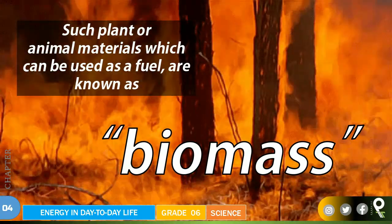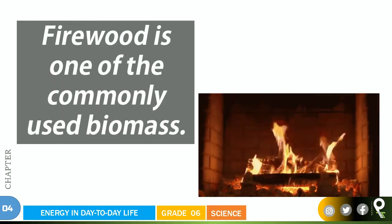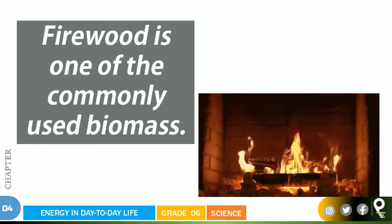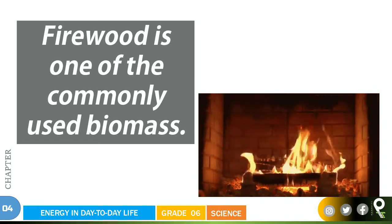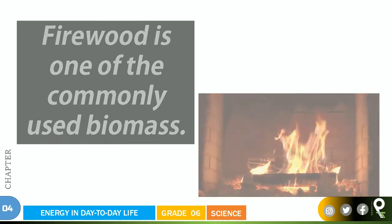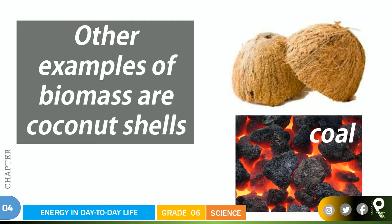Biomass refers to plants and animal materials that we use as fuel. Firewood is one of the most commonly used types of biomass. Almost all houses in Sri Lanka used to have these kinds of stoves. Other examples of biomass include coconut shells — every house has these — and coal is one more example of biomass.